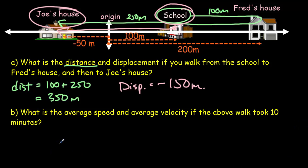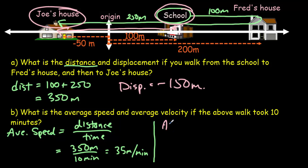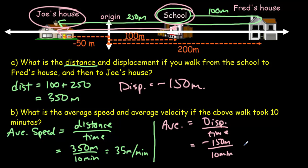Average speed equals distance divided by time: 350 meters in 10 minutes equals 35 meters per minute. Average velocity is a vector equal to displacement divided by time: negative 150 meters divided by 10 minutes gives negative 15 meters per minute. He would have ended up in exactly the same place if he had traveled to the left at an average speed of 15 meters every minute.